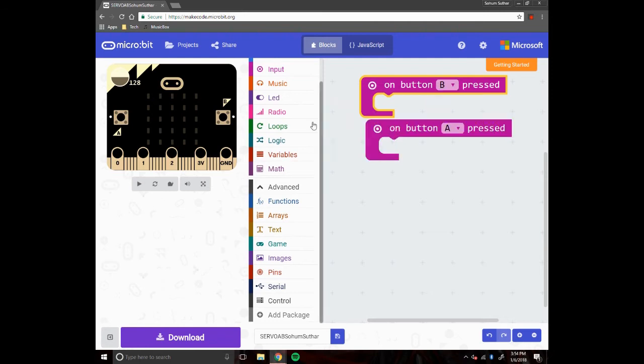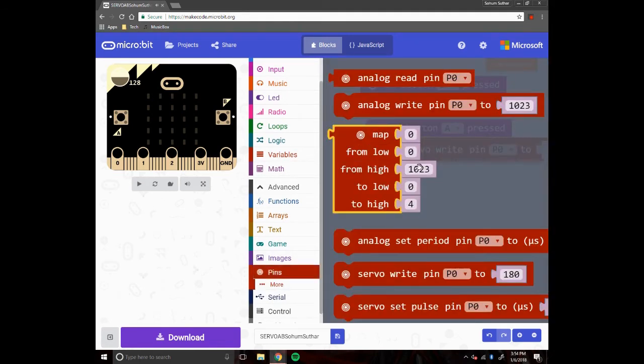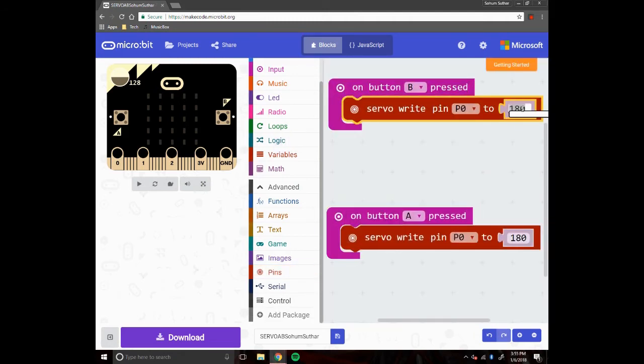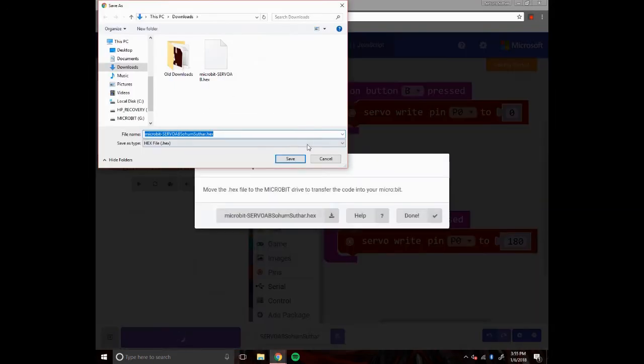So first, you want to go into input and take on button A pressed, and take that twice. Then change one to B, and go into pin. And take two of servo right, pin zero to 180, and change one to zero instead of 180.